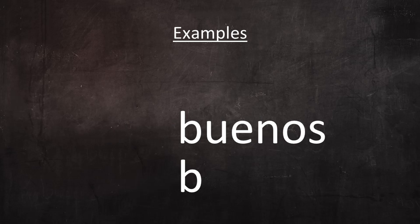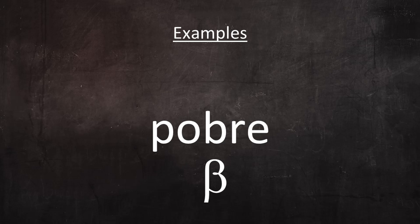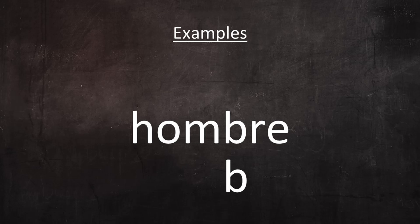'Buenos.' In this case, B is a stop because it comes at the beginning of an utterance. 'Son buenos.' And in this case, B is still a stop because it comes after the M sound — I explain in my video on N that N before B is pronounced as an M sound. 'Pobre.' 'Hombre.' This B is a stop because it comes after M. 'Libro.'